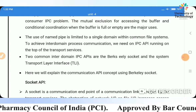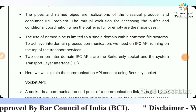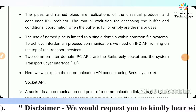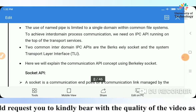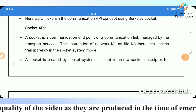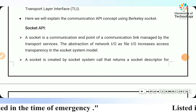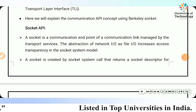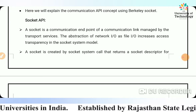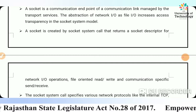Two common inter-domain IPC APIs are the Berkeley socket and the System Transport Layer Interface (TLI). A socket is a communication endpoint of a communication link managed by the transport services. The abstraction of network I/O as file I/O increases access transparency. A socket is created by a socket system call that returns a socket descriptor for network I/O operations.